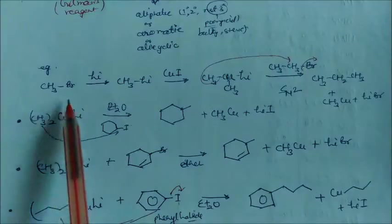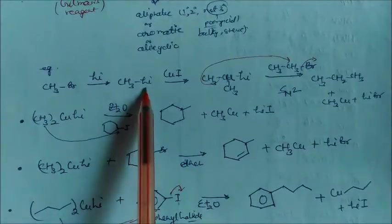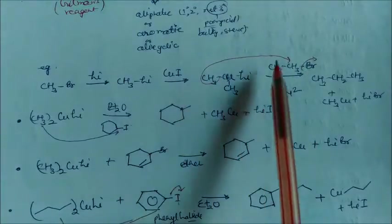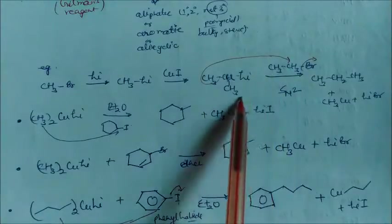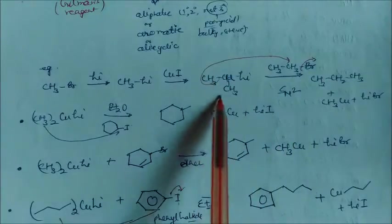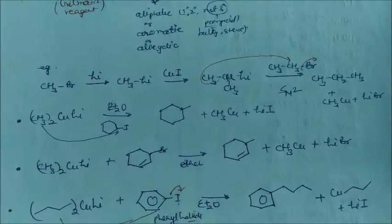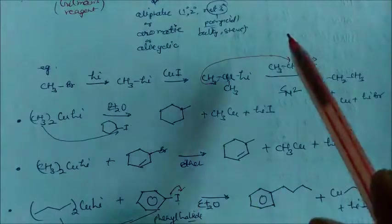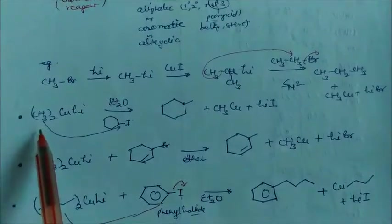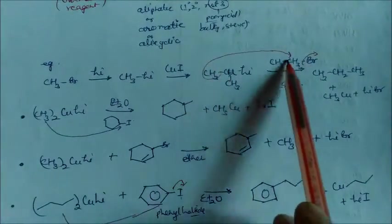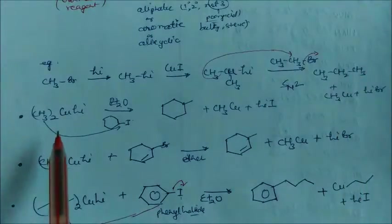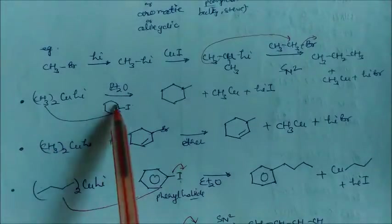Let us see some examples. Methyl bromide reacts with lithium to give methyl lithium, which then reacts with CuI to give the Gilman's reagent dimethyl cuprate lithium. This Gilman's reagent reacts with an aliphatic halide such as CH₃CH₂Br via SN2. One methyl from the reagent attacks the primary carbon and Br leaves, giving the product. Counting the carbons — one from one side and two from the other — we get propane, a three-carbon alkane.